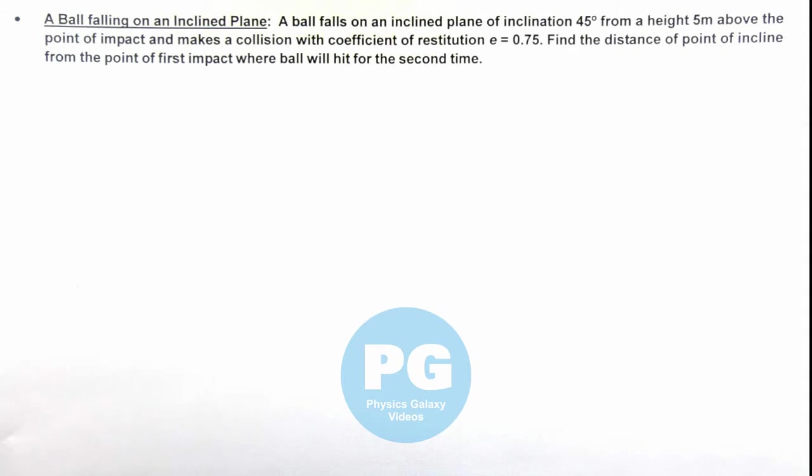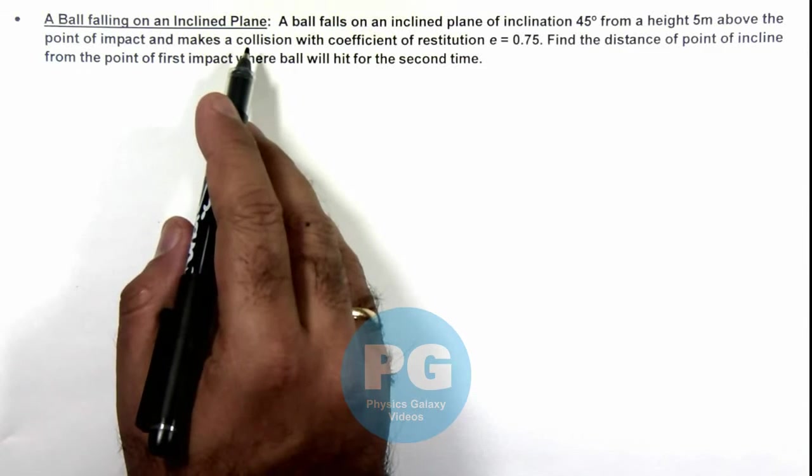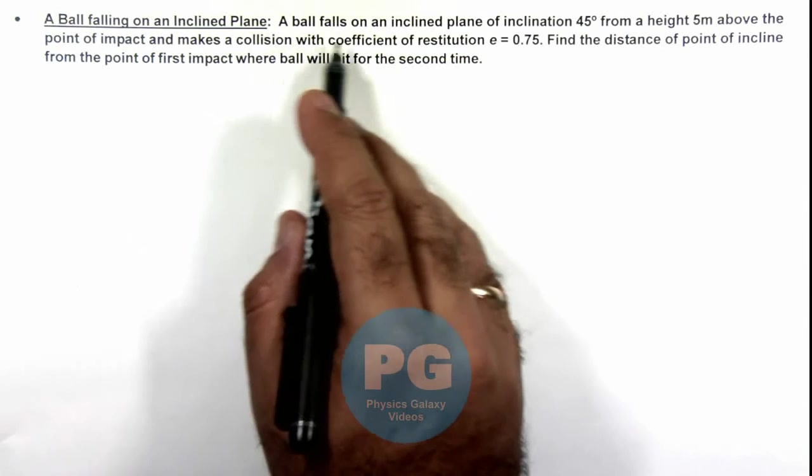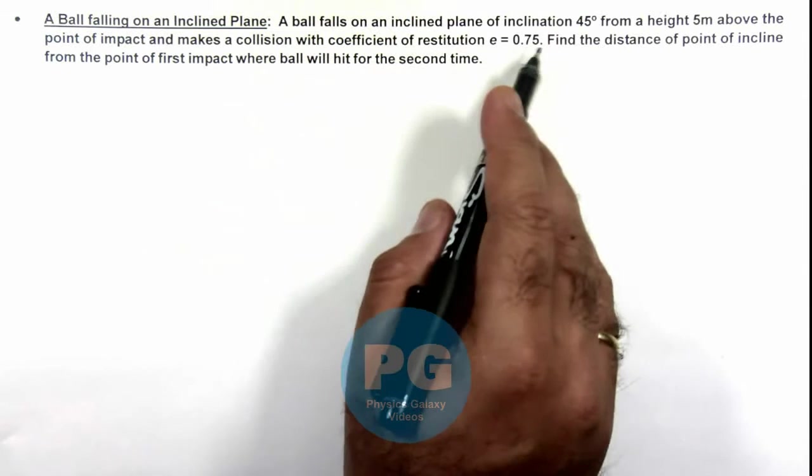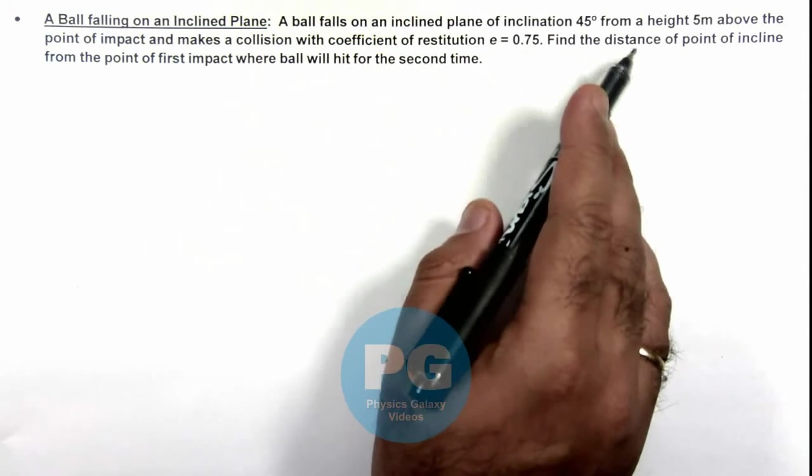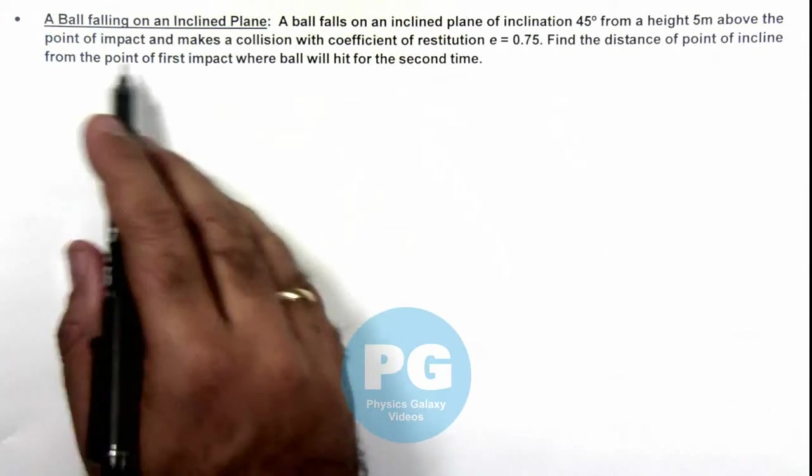In this illustration we'll discuss a ball falling on an inclined plane. We are given that a ball falls on an inclined plane of inclination 45 degrees from a height of 5 meters above the point of impact.